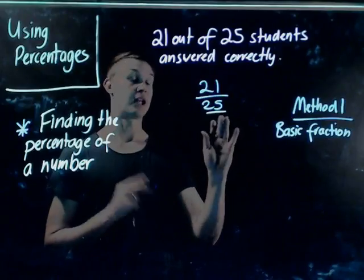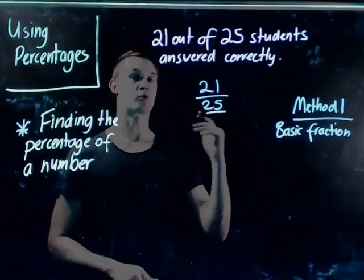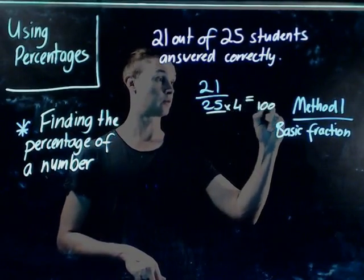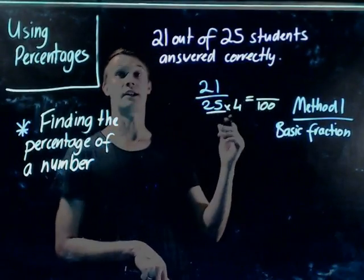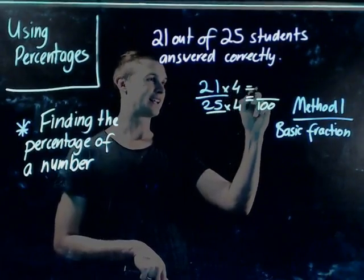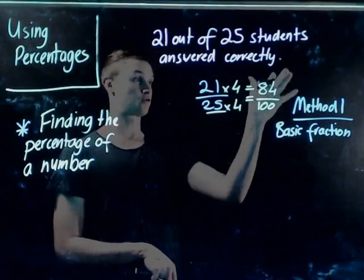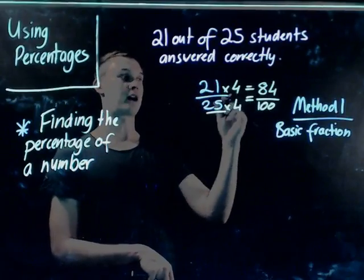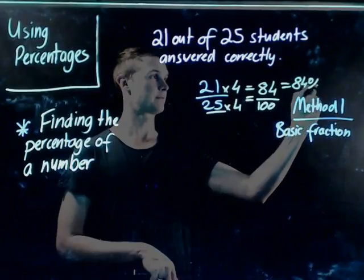And using 25, I know that I can. So if I times 25 by 4, I know that that will equal 100, which will make it easy for my percentage conversion. So all I need to do is times 21 by 4, and that would equal 84. So easily I can just transfer this into a percentage. So I know that 84 over 100 means 84%.